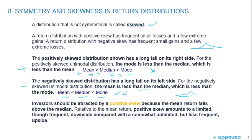That's the way to memorize it because exam questions will jumble these up and you just have to write it out and match up the phrasing. From the text: investors should be attracted by a positive skew because the mean return falls above the median. Relative to the mean return, a positive skew amounts to a limited, though frequent, downside compared with a somewhat unlimited but less frequent upside. That's a little confusing because actual stock returns show some negative skew.